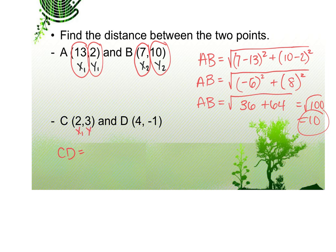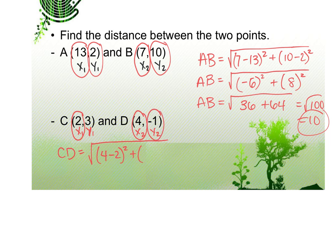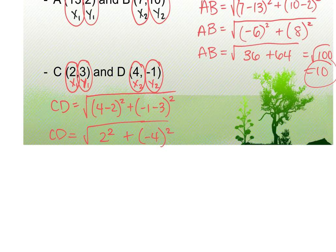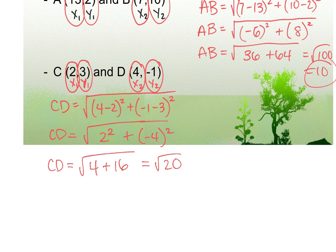For the second example, find the distance CD where C is at (2, 3) and D is at (4, −1). CD = √((4 − 2)² + (−1 − 3)²) = √(2² + (−4)²) = √(4 + 16) = √20. Now we need to simplify this radical.